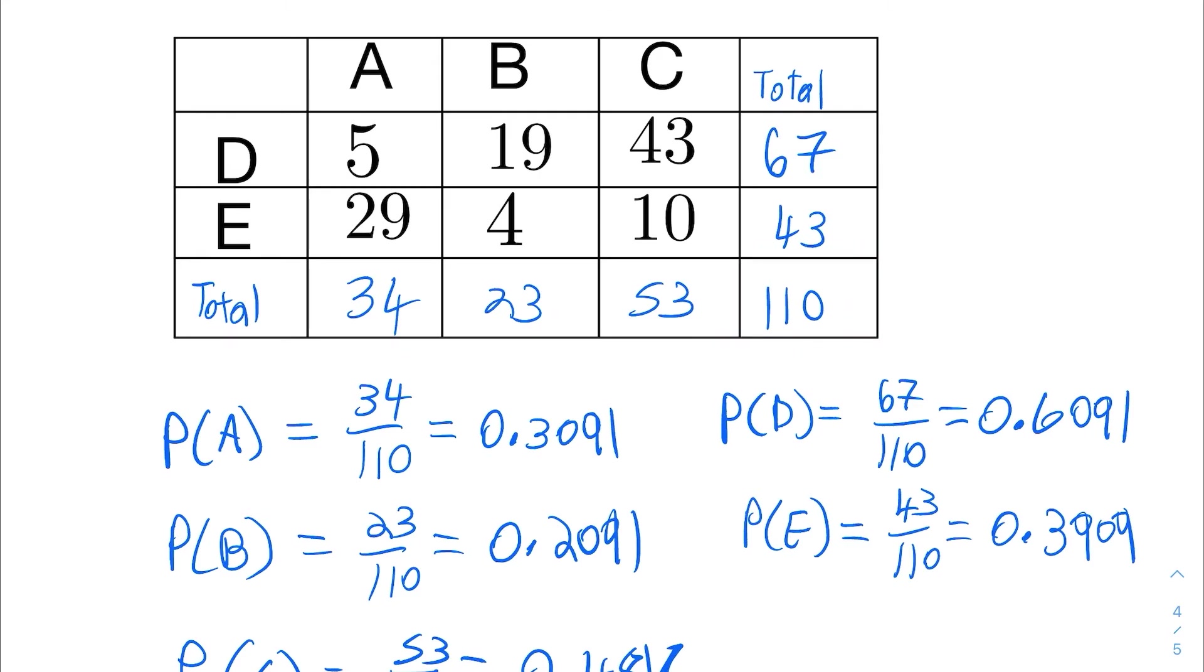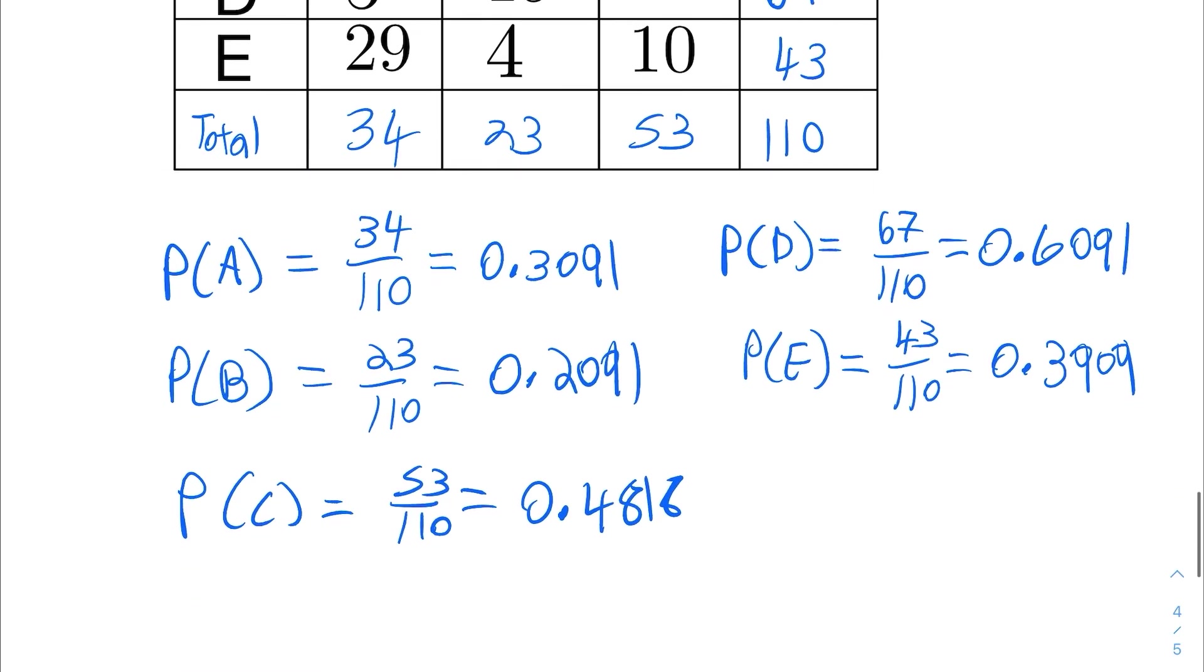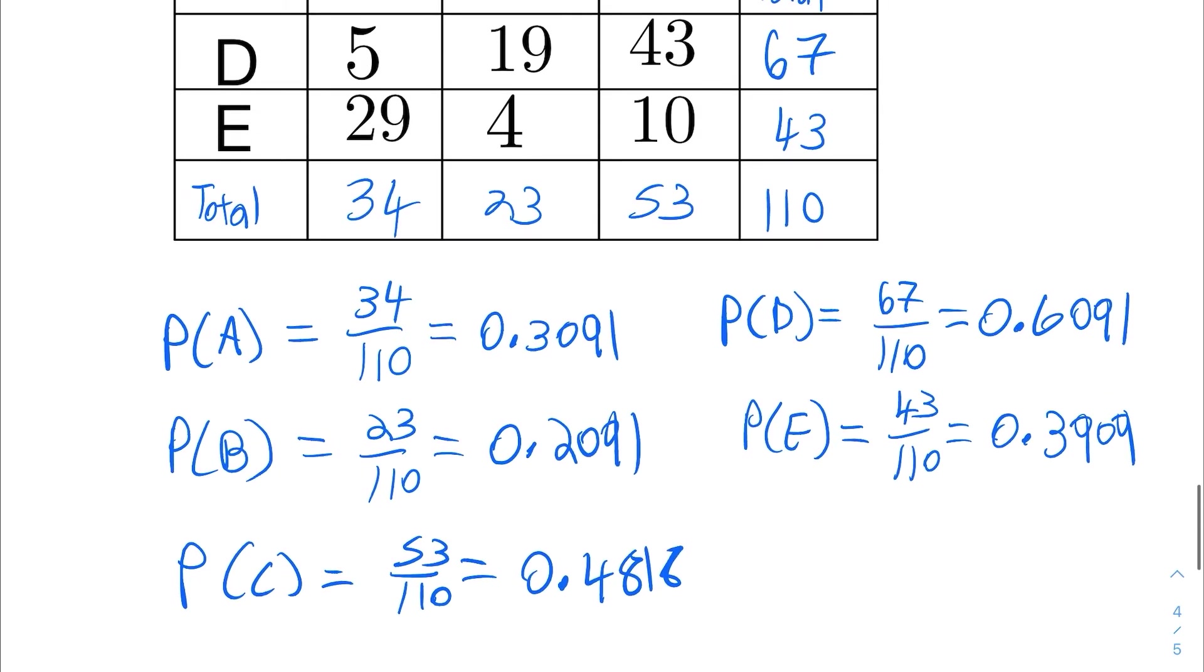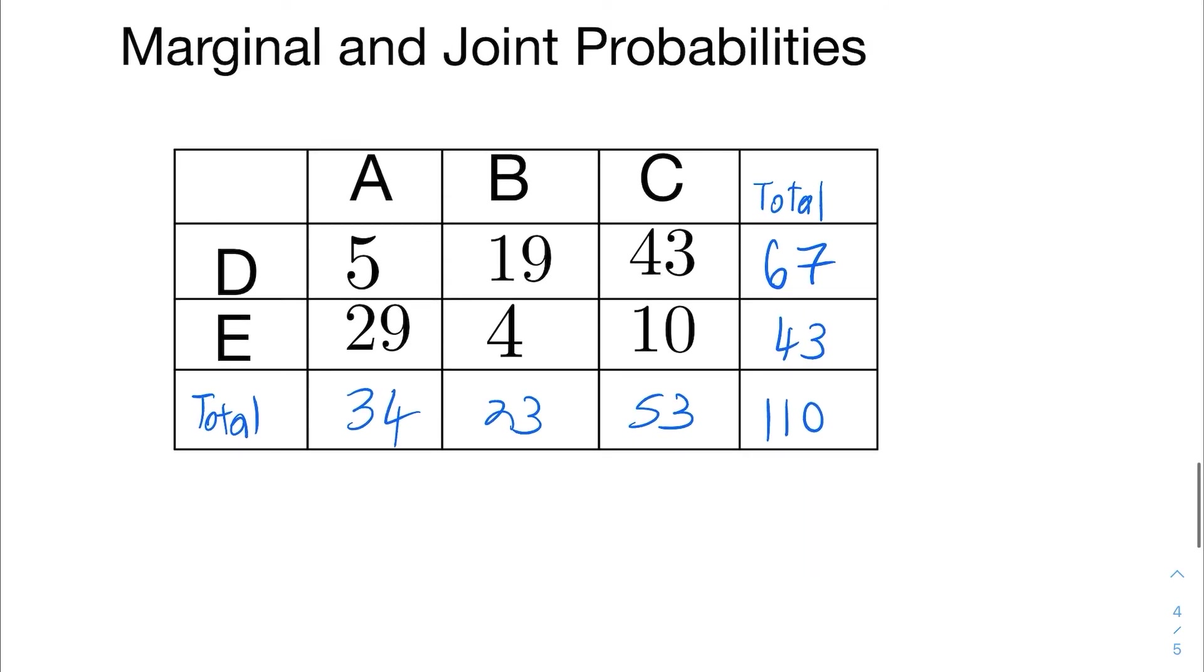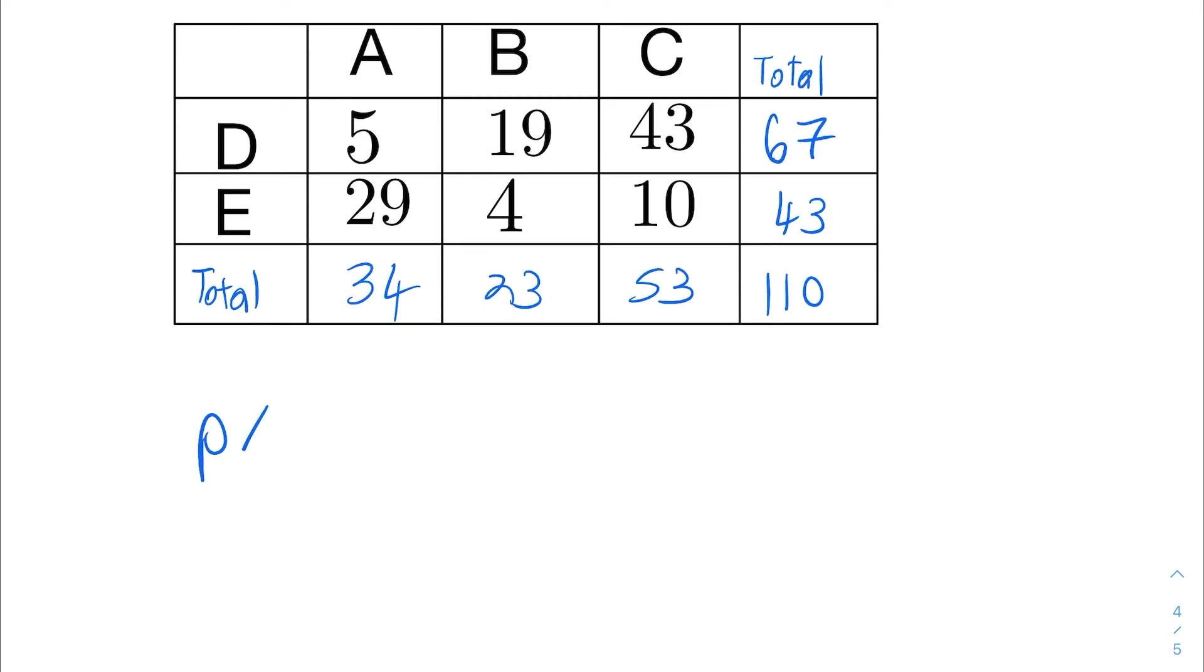We also have inside these counts, which are the joint probabilities. So let's take a look at the joint probabilities. These are all five marginals. For the joint probabilities, if you're in the row and column where A and D intersect, like right here, you can use that number 5 to calculate the joint probability of A and D both happening at the same time. That's going to be 5 over 110. And the probability of A and D then is about 5%.